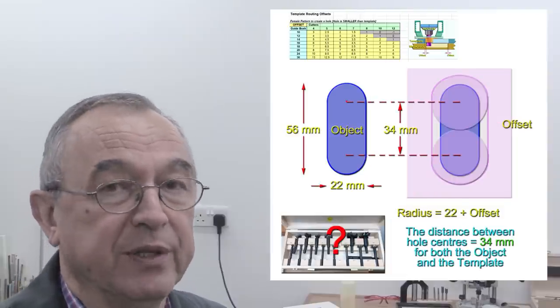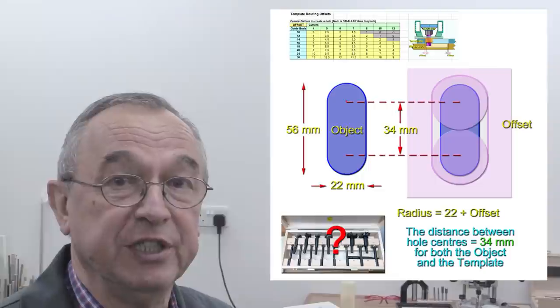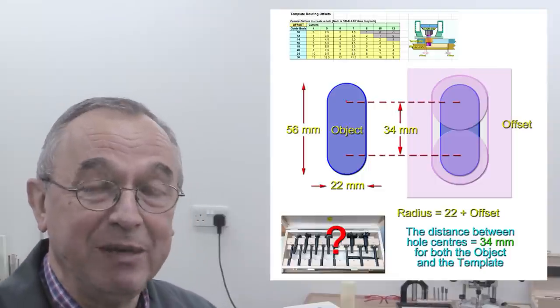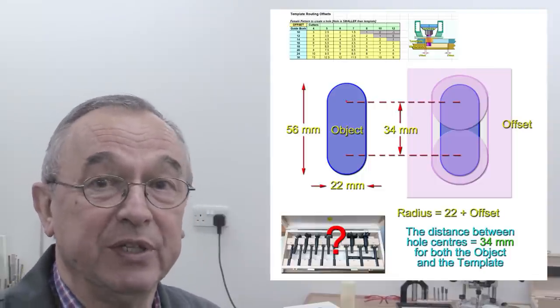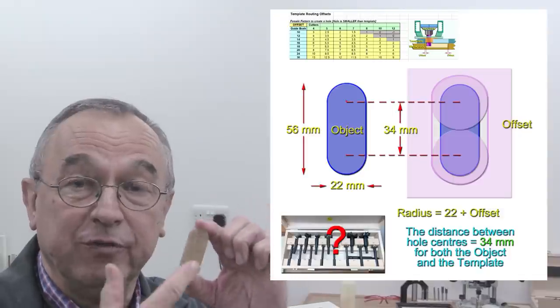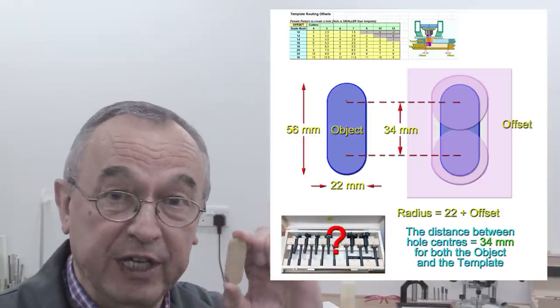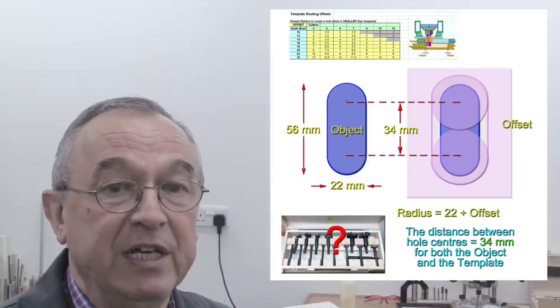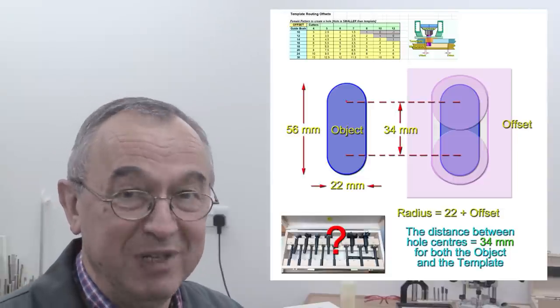Now, I should just point out that the centre between the two holes that we have to drill in the template is the same distance as that between the centres of the curved portions of the object we're copying. And in our case, that is 34mm.